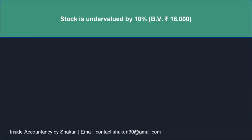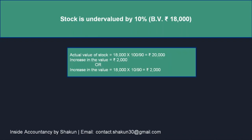Stock is undervalued by 10%, where the book value of stock is 18,000 — that means in the balance sheet, stock appears at 18,000, which is the undervalued amount. That means the real value of stock is more than 18,000. Now this 10% is to be applied on that increased value, which is not given to us in the question. So if we have to apply this rate to the current book value, we will have to make certain changes.